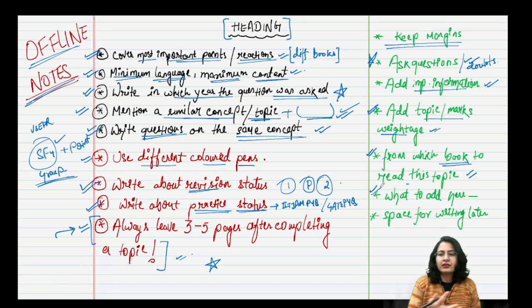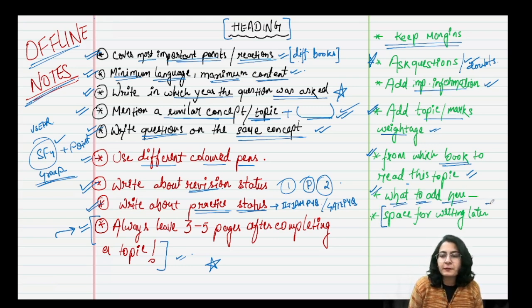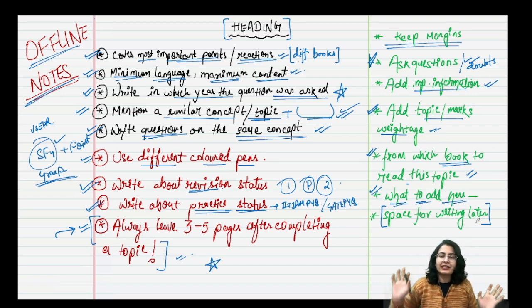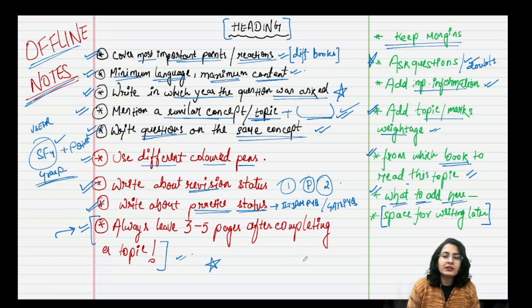Then secondly, then lastly you can say that you can write whatever you want to add here. Something else also, let's say some equation, whatever you feel like you can add. And also leave some space for writing later on because later on there's always something left. You will always have something to write later on. So your notes should be very... you should have notes for your future, not just for the CSI NET examination. Your notes should be very awesome.